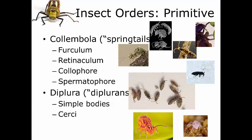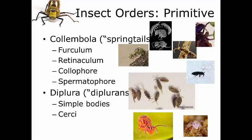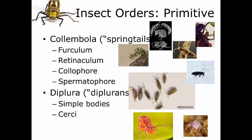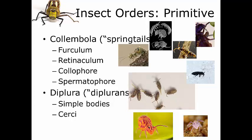Collembola also have a ventral tube on the first abdominal segment called the collophore. The collophore functions in osmoregulation and in water absorption. The springtail evolved in cool climates, so the relative abundance in the soil tends to increase as the temperature decreases. We can find this group here in Texas usually during the cooler winter months, especially if you go out digging in really rich soil.